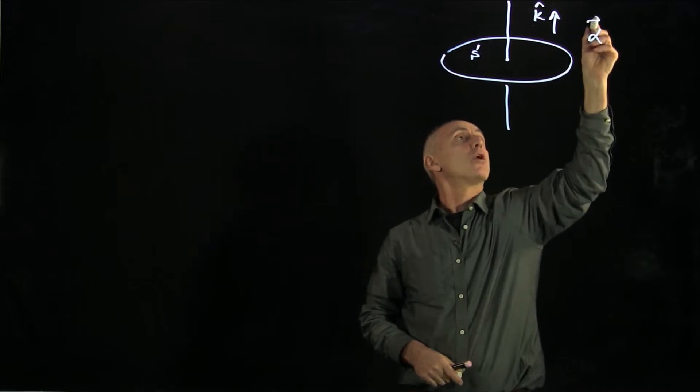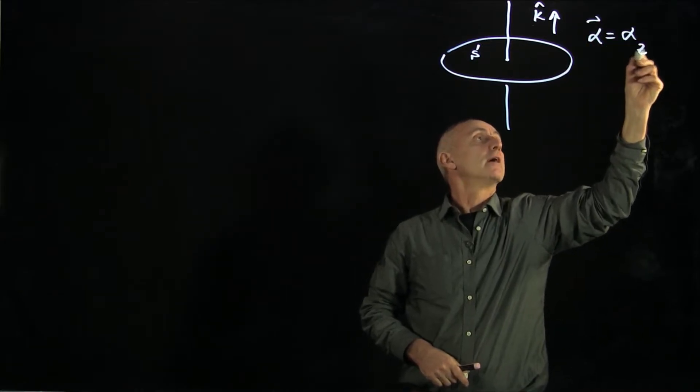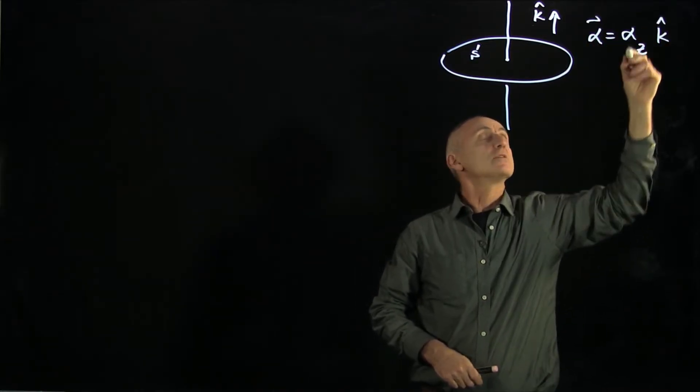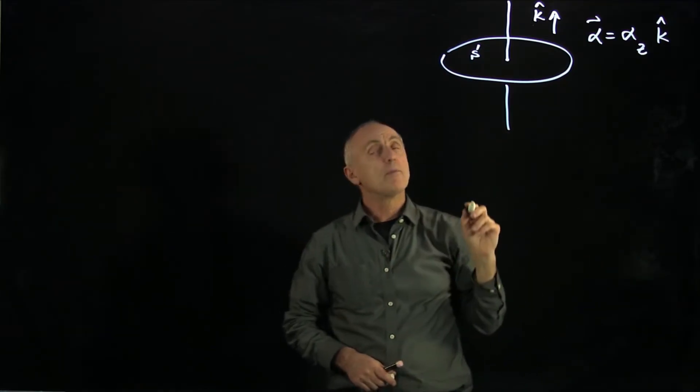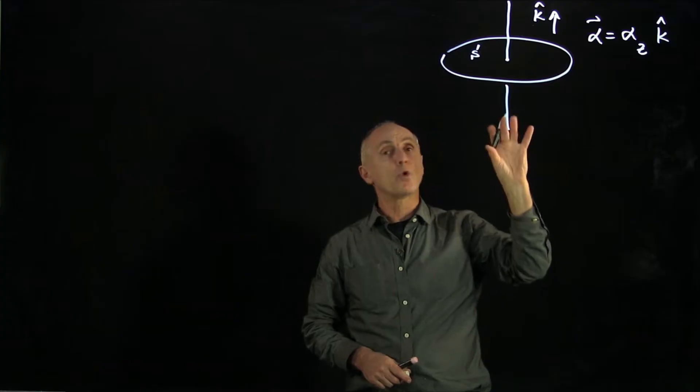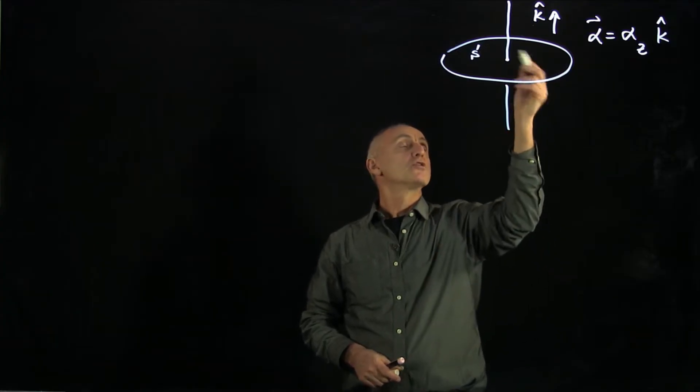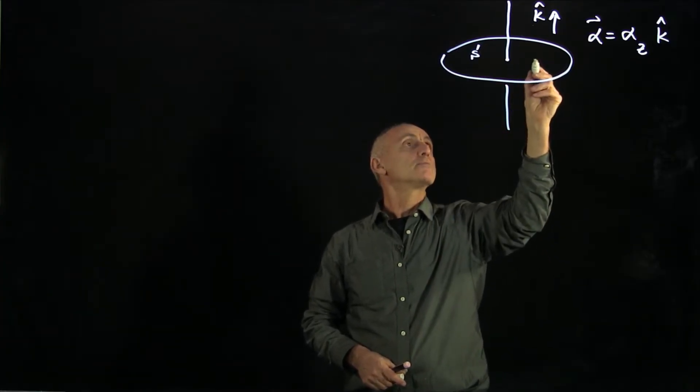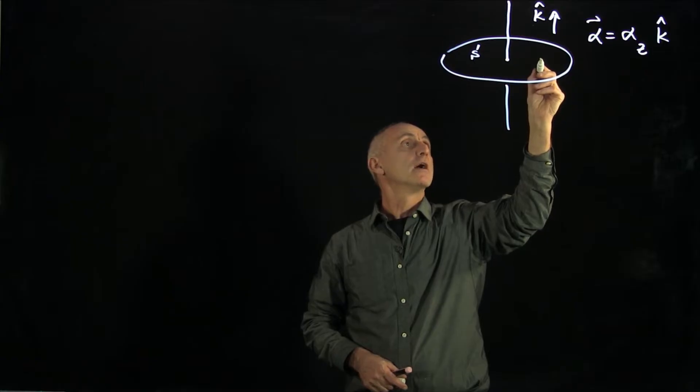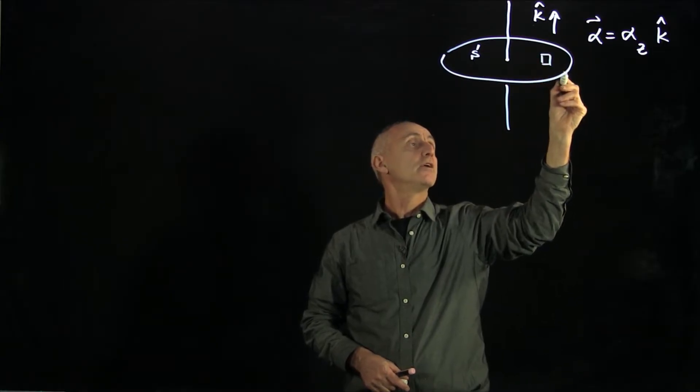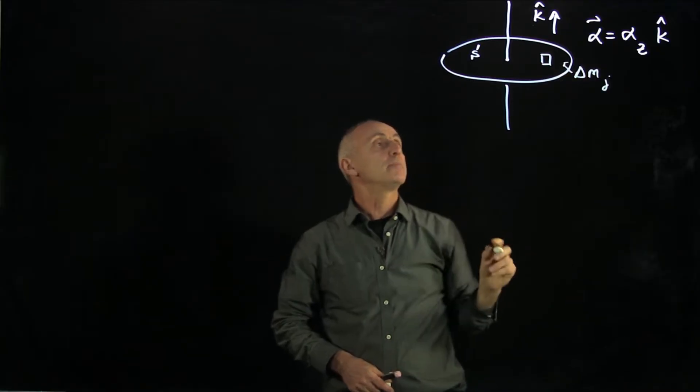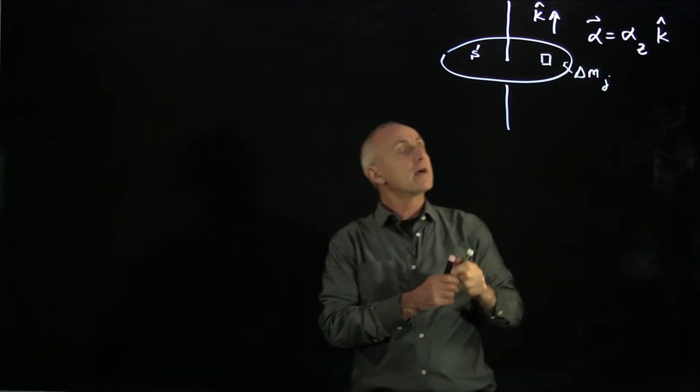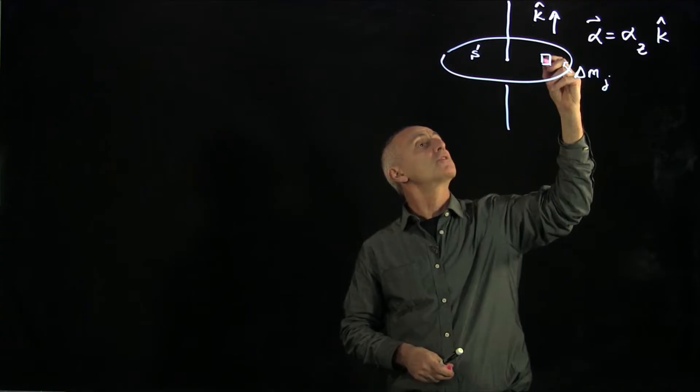And this object is undergoing an angular acceleration where alpha z is the z component of the angular acceleration. Now, what we'd like to consider is the torque on this object. So the way we'll do it is we'll divide the object into a bunch of pieces. And let's identify a piece here as delta m_j.